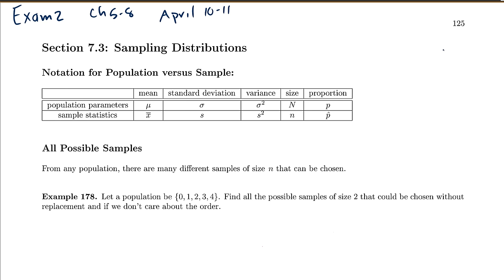Before we start learning new stuff, there is a difference between population parameters and sample statistics. Your population is everything you're interested in, and then you take a smaller sample. The mean of a population is called mu; for the sample it's x-bar. Standard deviation is sigma for the population and s for the sample. The variance is sigma squared and s squared. The sample size is n, and a proportion is p for your population and p-hat for your sample.